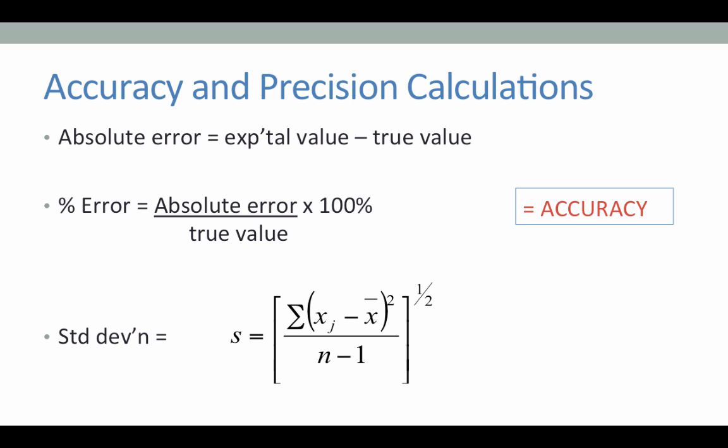You will see that depending on whether your experimental value is higher or lower than the true value, you will have either a positive or a negative percent error.